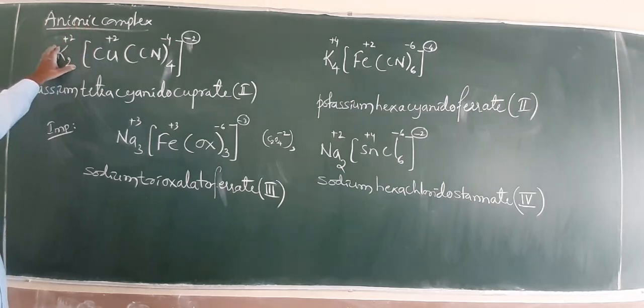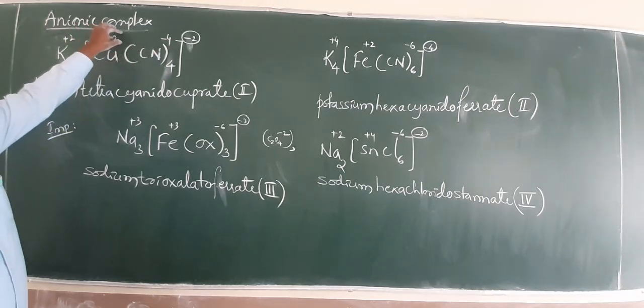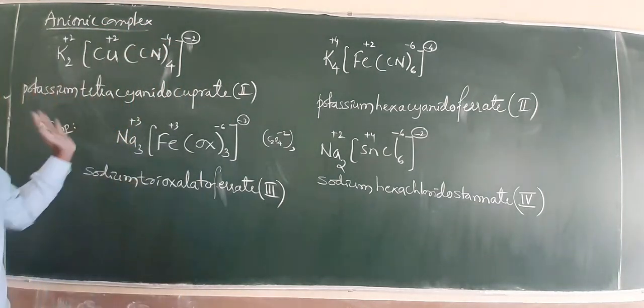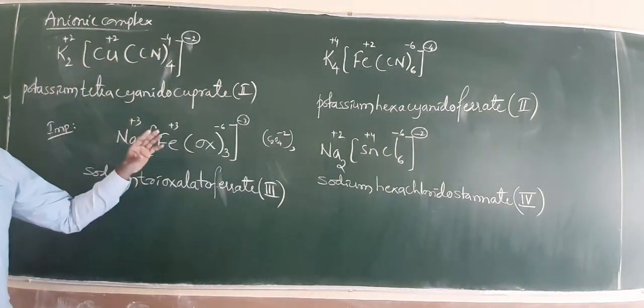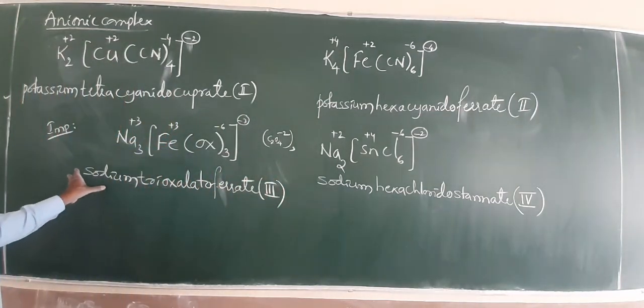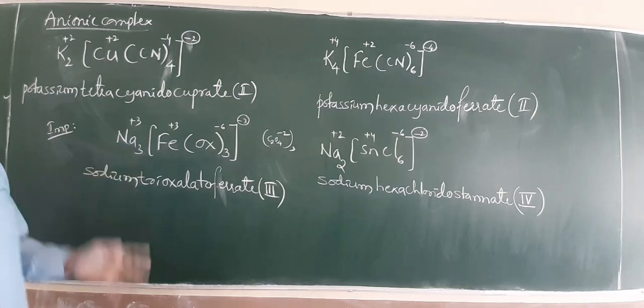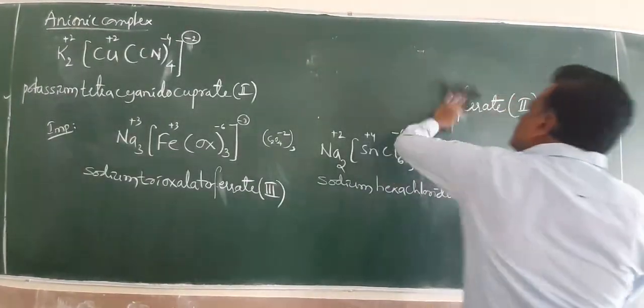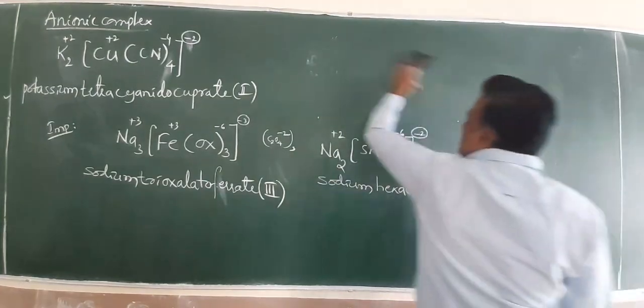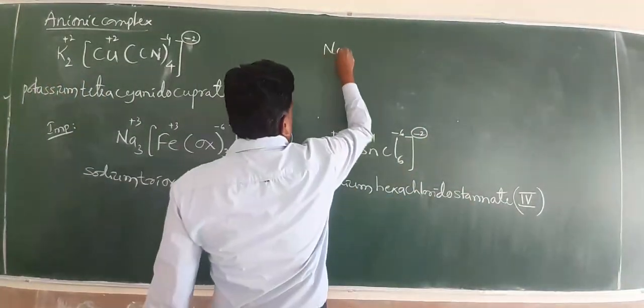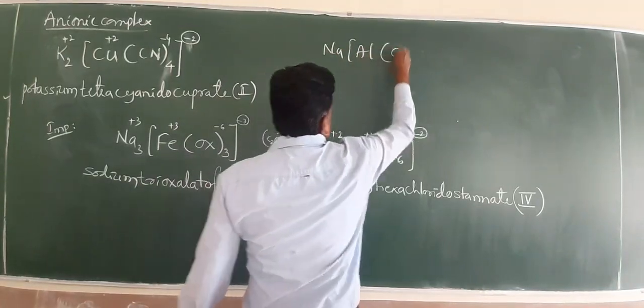Keep practicing dear friends. This very interesting. If you have anionic complex in square bracket, start with ionic sphere, ligand, central metal, and oxidation state.